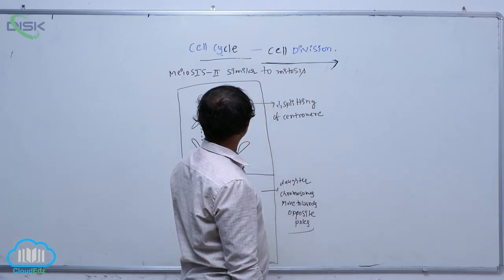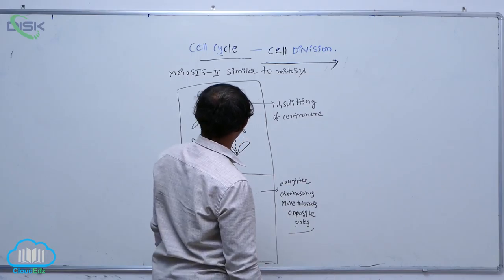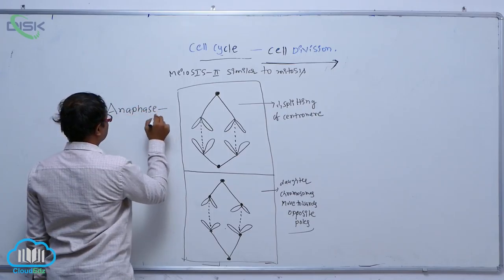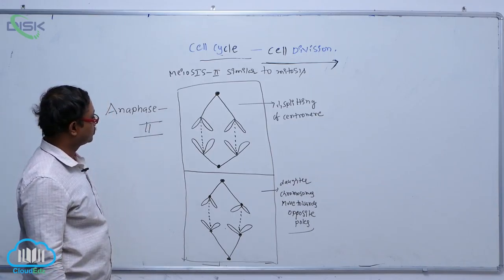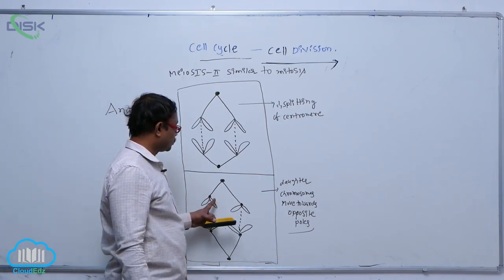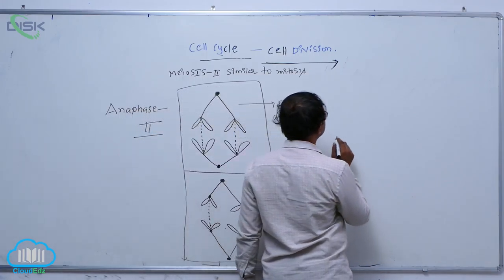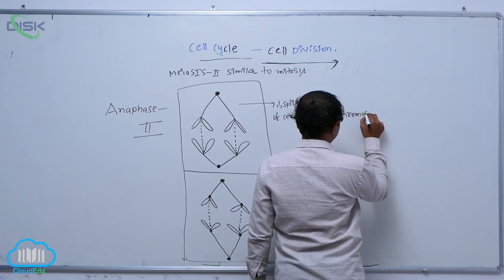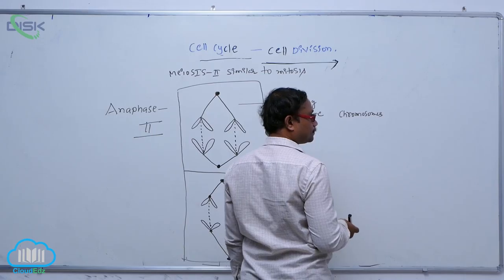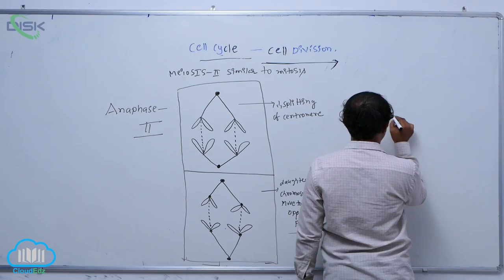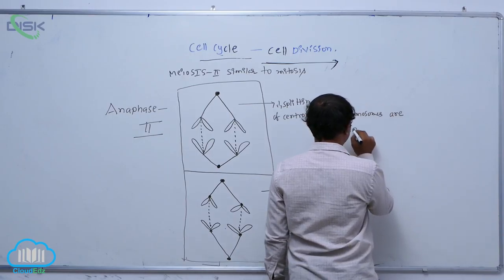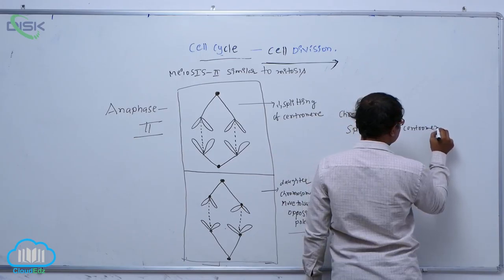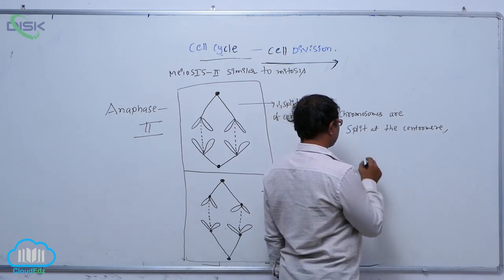In meiosis, anaphase 2 is similar to mitosis. During anaphase 2, by the forcing of the spindle fibers, chromosomes are split at the centromere by the spindle fibers.